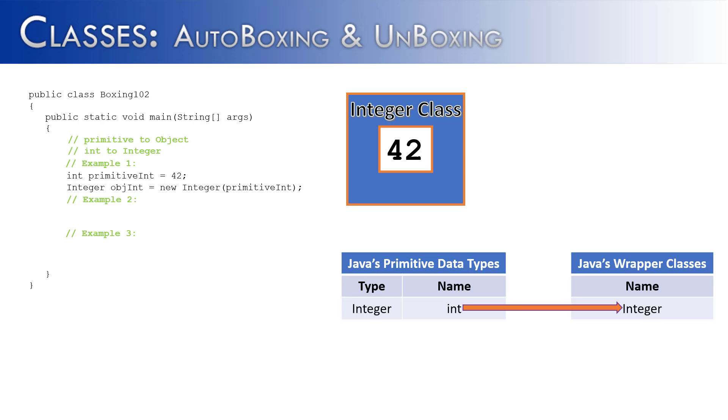And so the result looked like this. 42 inside of the integer class. Let's see if there's another way that we can accomplish this. In example 2 I've taken primitive int 2, assigned it to 42, but this time you can see integer objint 2 instead of using a constructor and the keyword new.